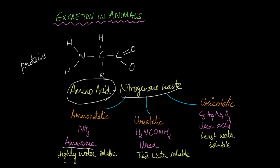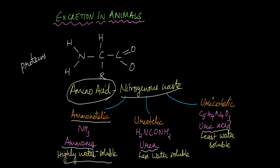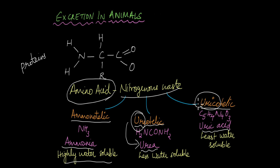Different animals excrete different forms of nitrogenous waste. Some excrete it as ammonia, some as urea, and some as uric acid. Animals that excrete ammonia are known as ammonotelic organisms. Animals that excrete urea are known as ureotelic. The least water-soluble of the three is uric acid, and animals that excrete uric acid are known as uricotelic. Don't confuse ureotelic (urea) with uricotelic (uric acid).